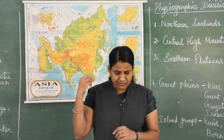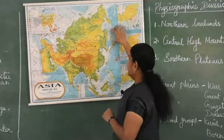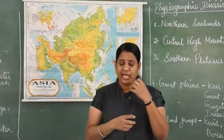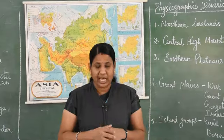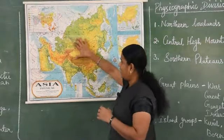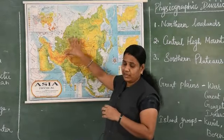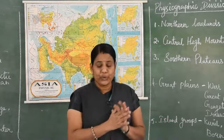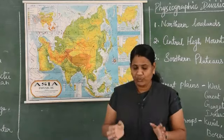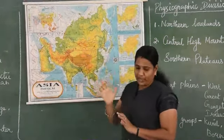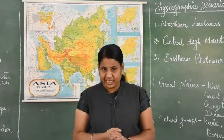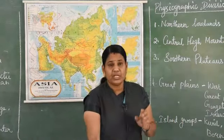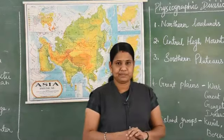In and around the equator, there is a uniform climate throughout the year - there is no winter season. The average temperature is 27 degrees Celsius and the mean rainfall is 1270 millimetres in the equatorial zone.